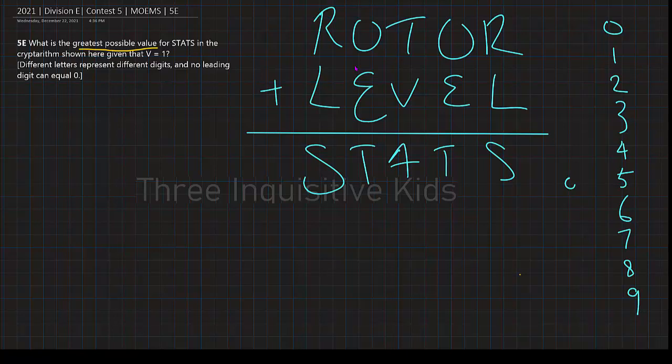We're trying to find the greatest possible value for STATS. So what that tells us is that we're trying to make STATS as large as possible. I'm going to start at the very head of this, at the very largest place value of STATS, and I'm just going to make that the biggest digit possible, 9. So right away, our ten thousands digit is 9.